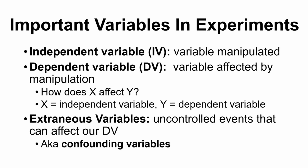We have some important variables, some important definitions to discuss. This might be complete review, but our independent variable, or IV, is the variable that's being manipulated by the researchers.